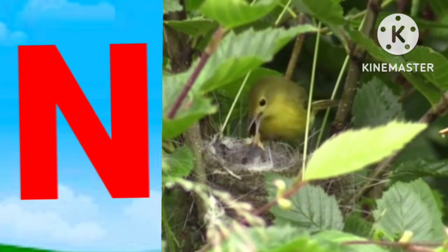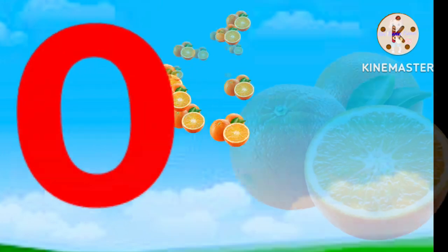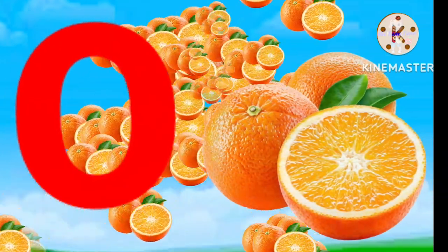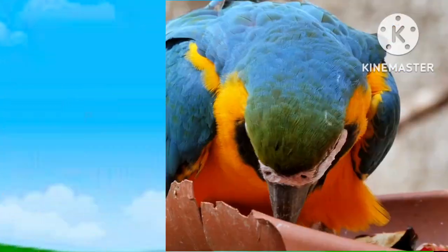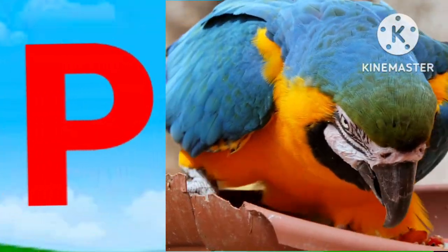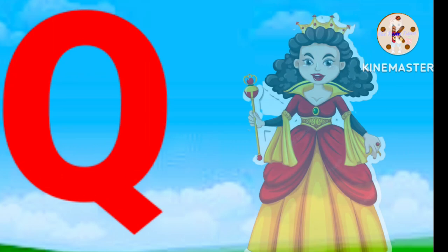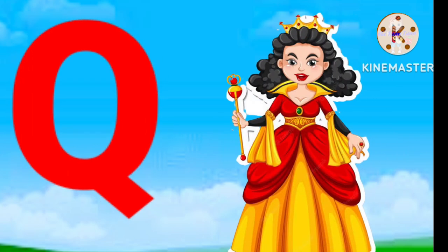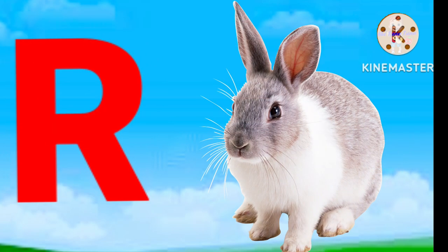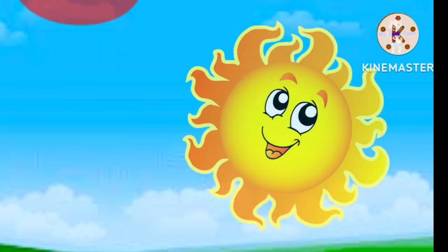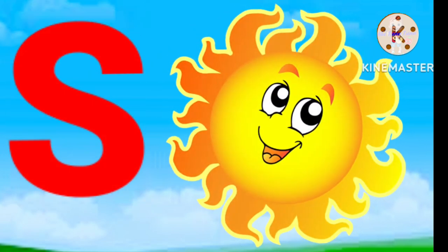N for nest, O for orange, P for parrot, Q for queen, R for rat, S for sun.